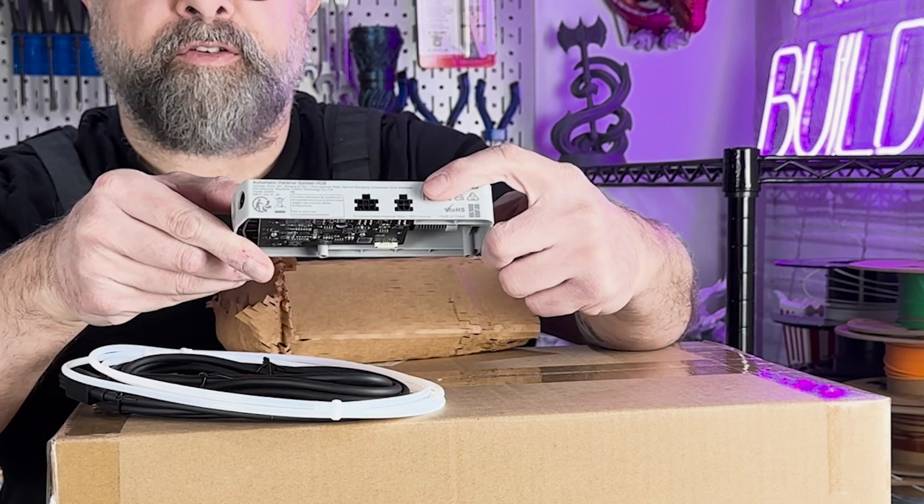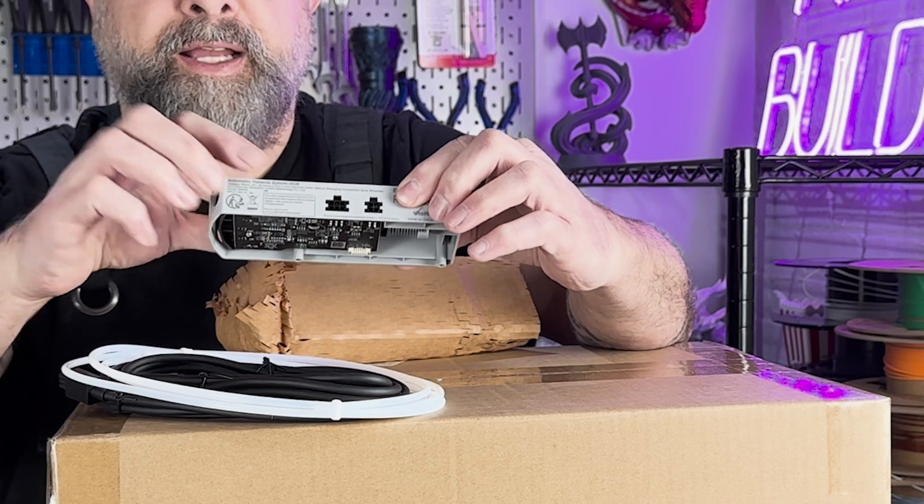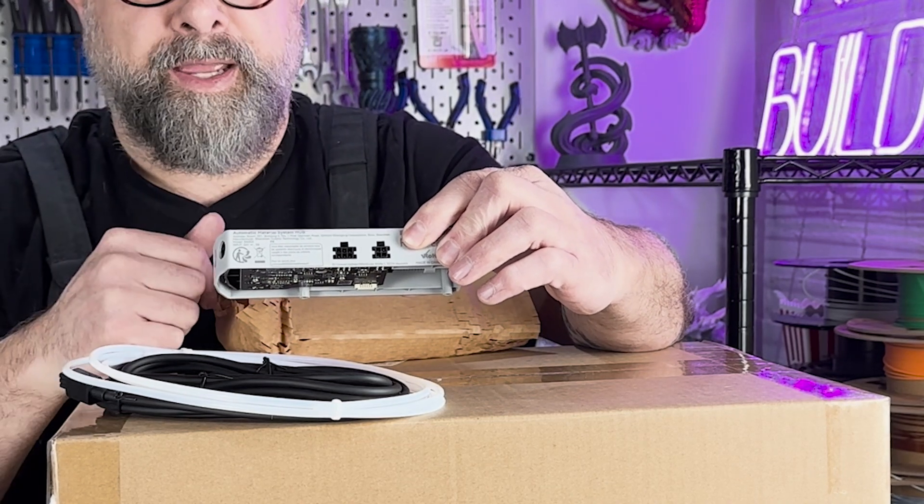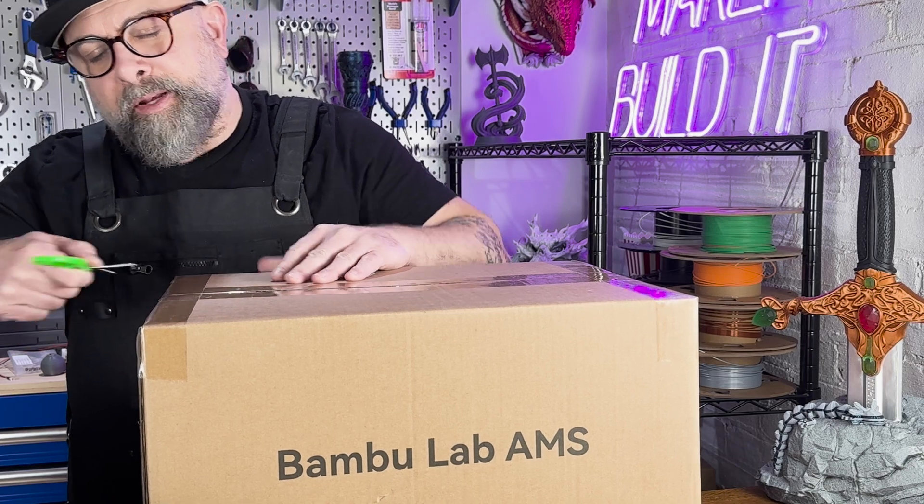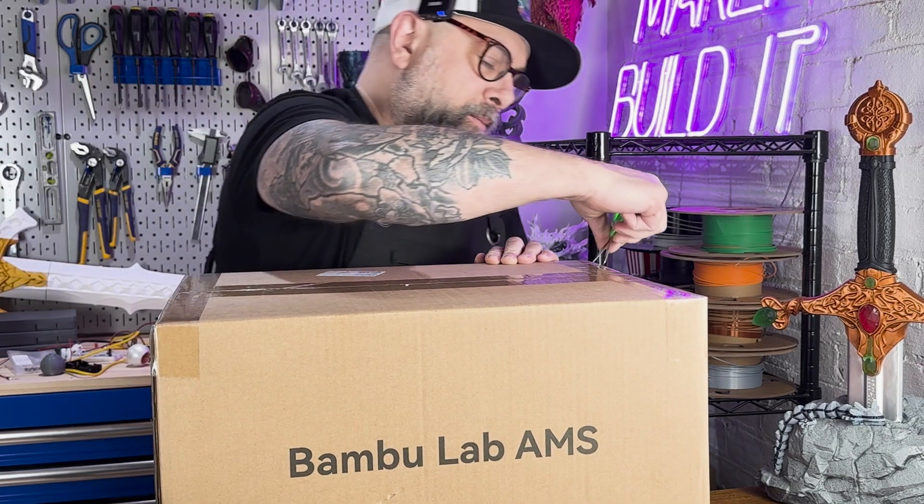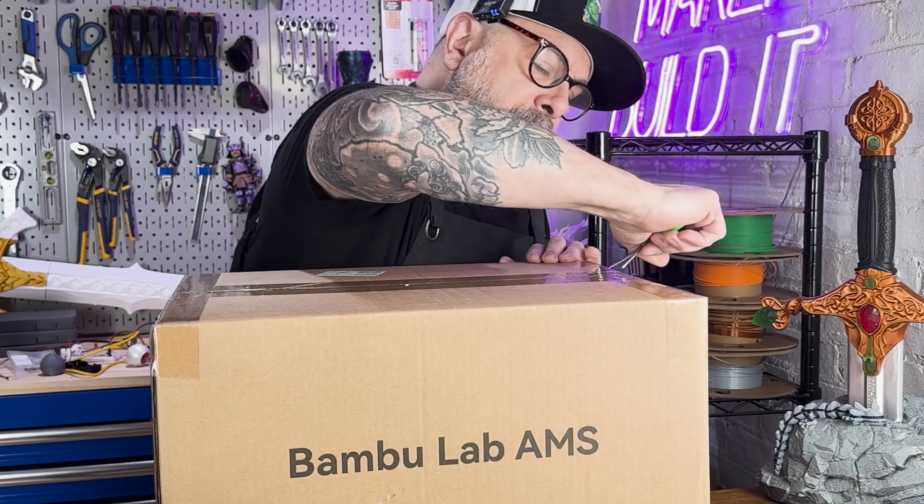We can see back here, we have our four pin, which is going to connect to the printer. And we have our six pin, which is going to connect to the AMS. Now, if you already have an AMS, you pretty much will know it comes in this box. But if you don't, let me show you.